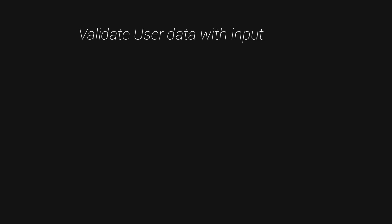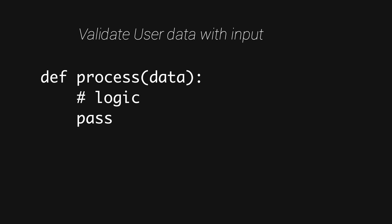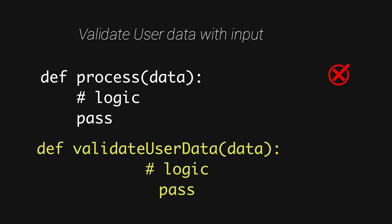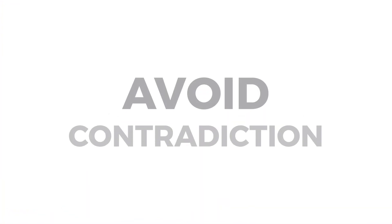Use descriptive function names. When writing functions, make sure the name is descriptive enough to understand its purpose. For example, if you want to validate a user's input data, don't name the method 'processData' — that says nothing about what process is being done. Instead, name it 'validateUserData'. From the method name alone, you'll know it validates user data, without having to go inside the method and read through all the code.